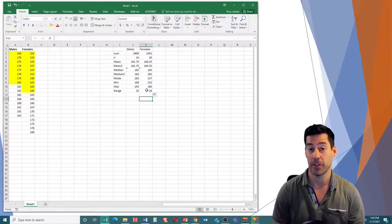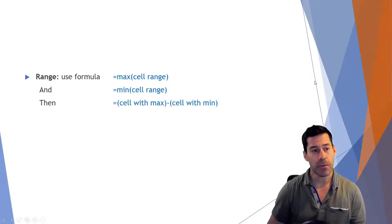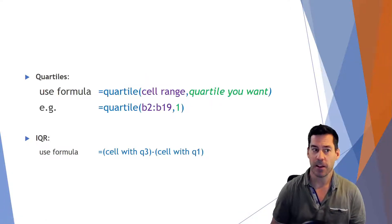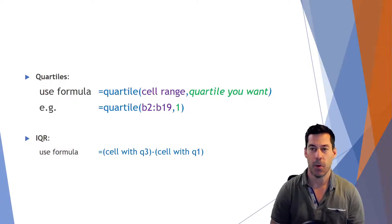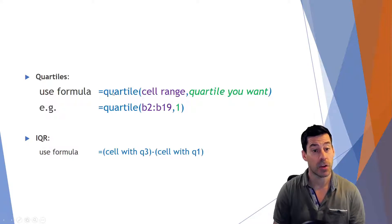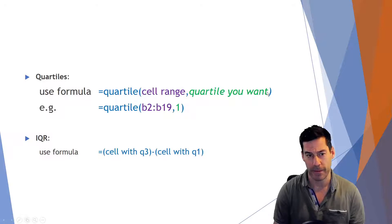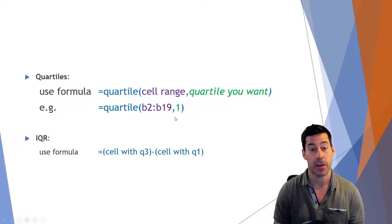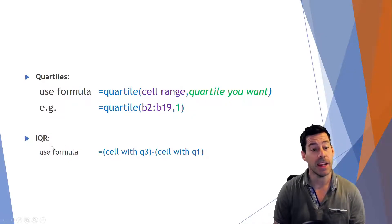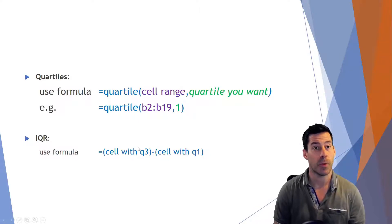Excellent. So now that we've got our range, let's calculate our quartiles and then our interquartile range. For quartiles, we're going to use the formula QUARTILE with the cell range and then the quartile number that you want. For example, QUARTILE from B2 to B19, comma, 1 would give us the first quartile. And our interquartile range we'll just calculate as equals the cell with quartile three minus the cell with quartile one.